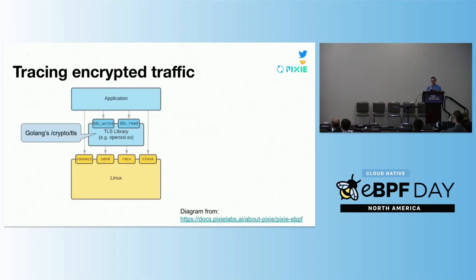Let's move on to the encrypted case. We are unable to hook into things at the same layer for encrypted traffic because by the time it gets to the syscall, it's already encrypted. So we need to access it just before it's encrypted or after it has been decrypted, and where this occurs is in the TLS library. In this example, we can see the SSL_write and SSL_read functions exist within the OpenSSL library, which is a common point of instrumentation.